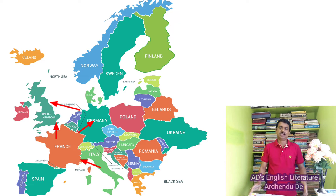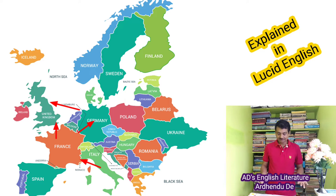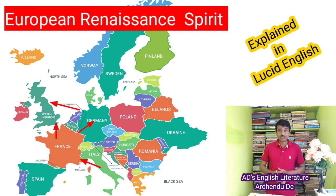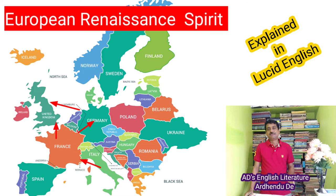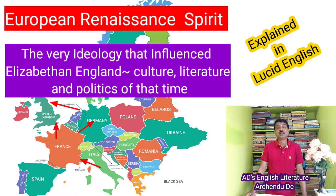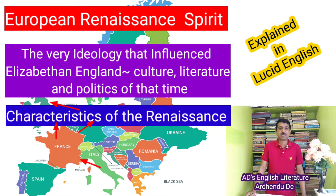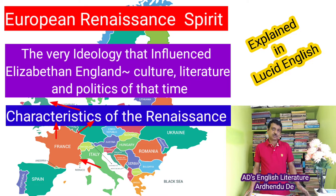Hello students, welcome to my YouTube channel Eddie Singly's Literature. I am Ordindu Day. Today we are going to discuss the features of Renaissance in literature as it happened in the Elizabethan period. In our discussion we will try to understand the European Renaissance spirit — the ideology that influenced Elizabethan England: life, culture, literature, and policies of that time.